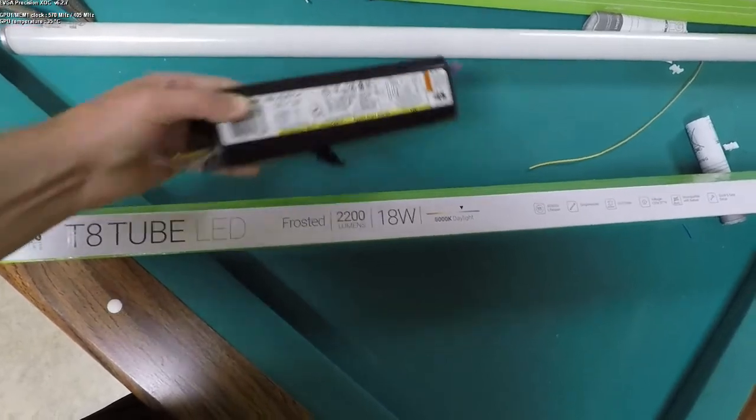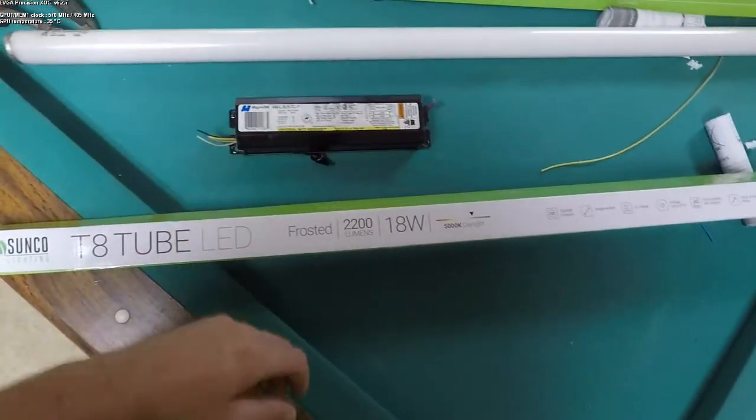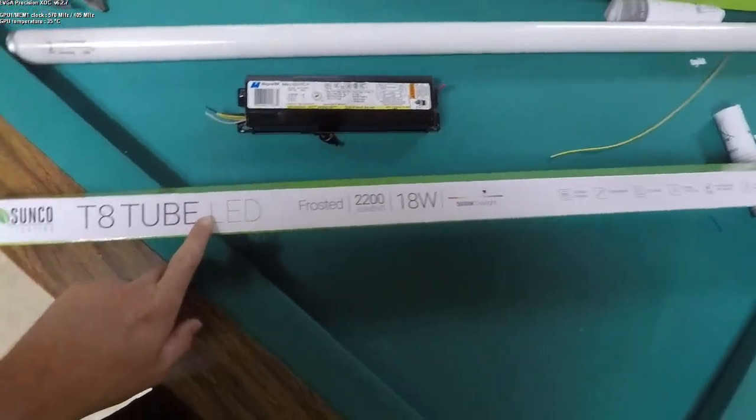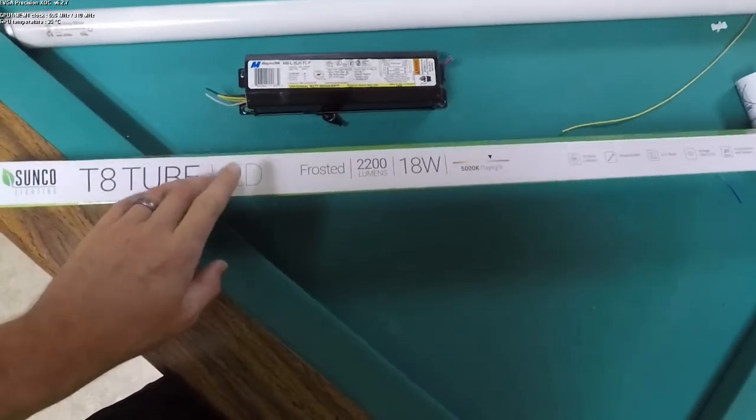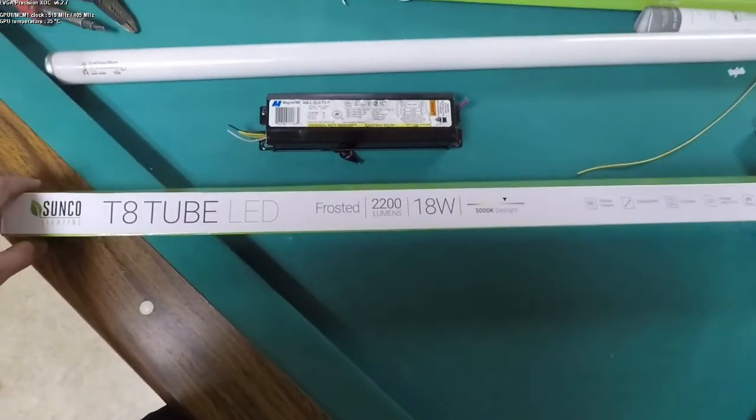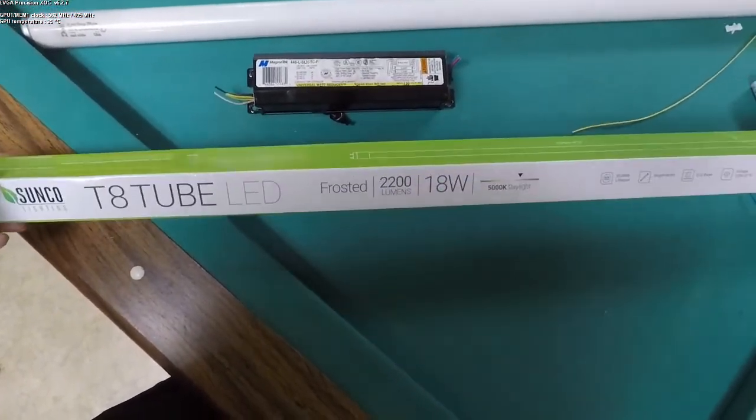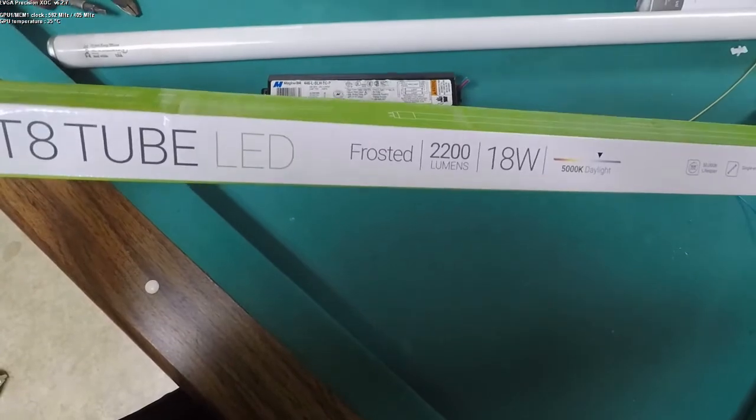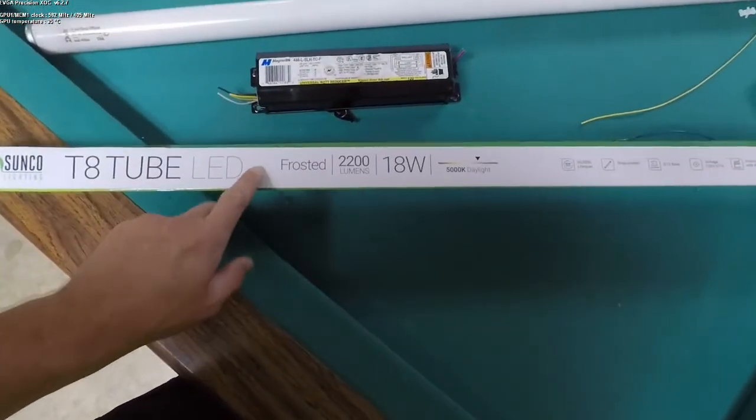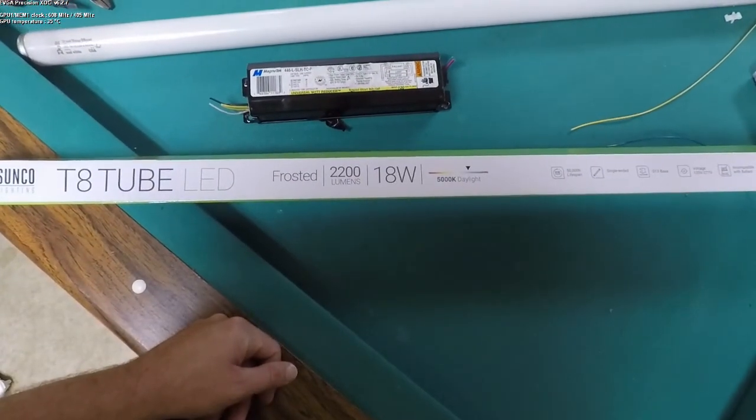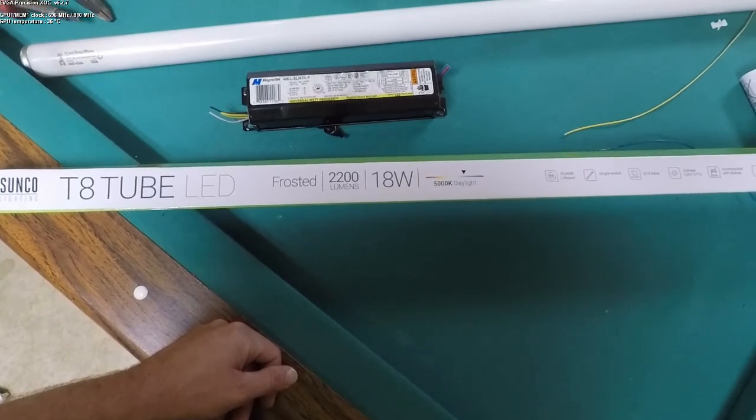There's two ballasts per fixture so get rid of those two ballasts. I'll put a link in the description for these tube lights for replacements and I'll probably just do a video doing one fixture. I've already done a couple so I'll just do one more fixture so you guys can see it. Let's get started.